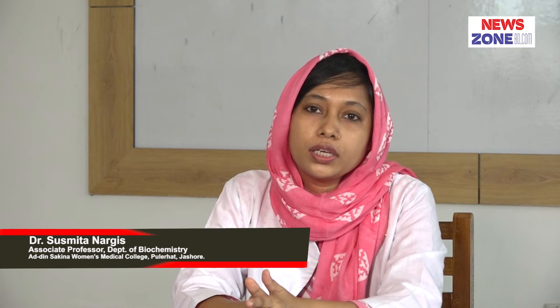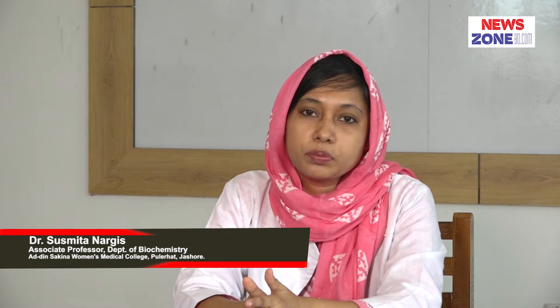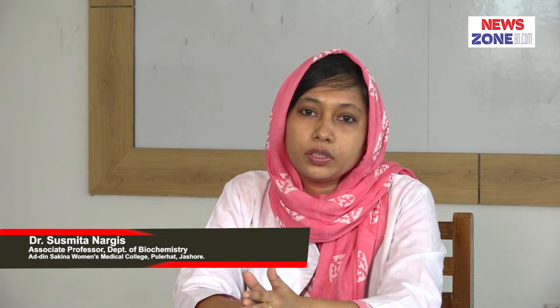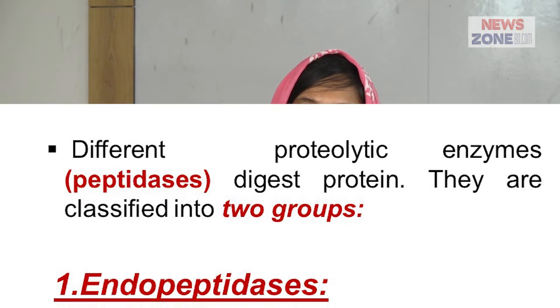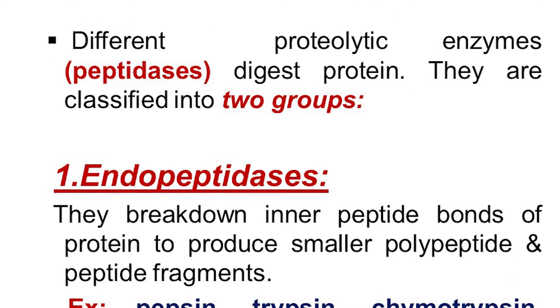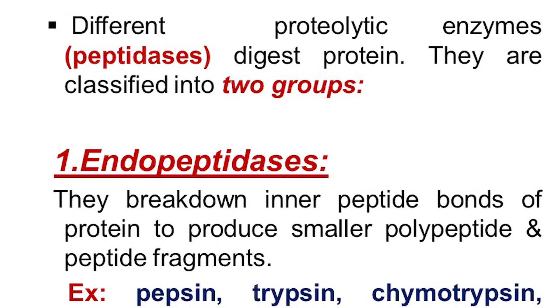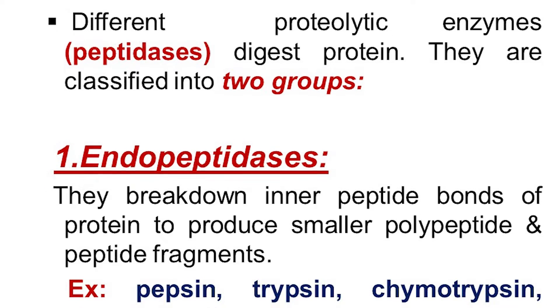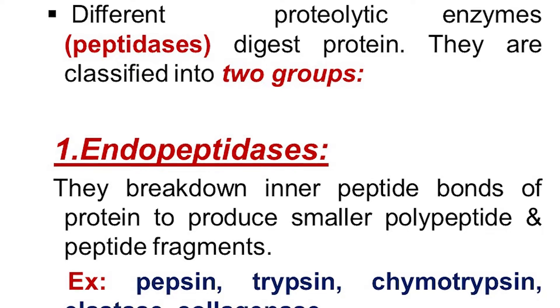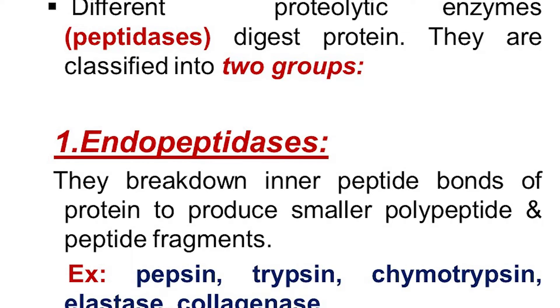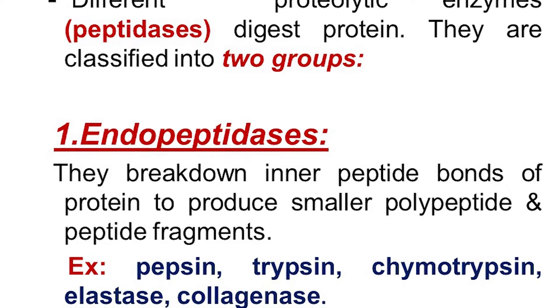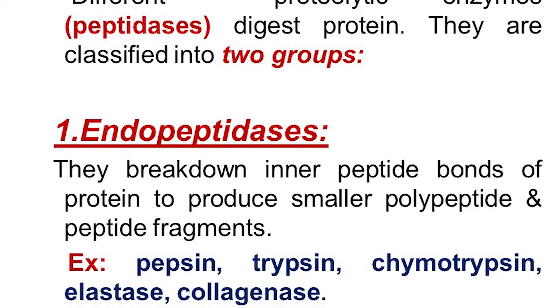All the proteolytic enzymes — the enzymes responsible for protein digestion — are together referred to as peptidases. These peptidases are classified into two groups: endopeptidases and exopeptidases. All these enzymes come from different digestive juices like gastric juice, pancreatic juice, and intestinal juice.